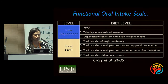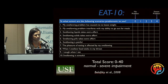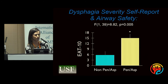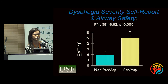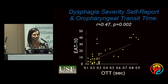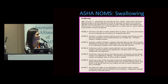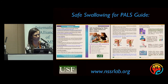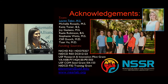The Functional Oral Intake Scale and the Eating Assessment Tool — a patient self-report of swallowing severity — are also used. We've done a study in 50 individuals with ALS showing that those who aspirate report on average three times higher EAT-10 scores, making this a very useful tool. These are our safe swallowing guidelines for PALS, again freely downloadable, along with the ASHA norms. Sorry I had to rush — thank you.